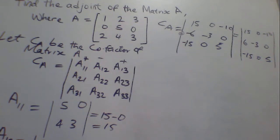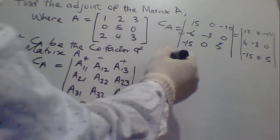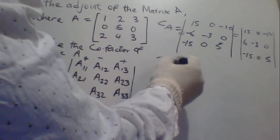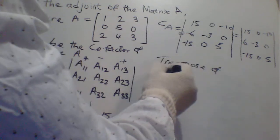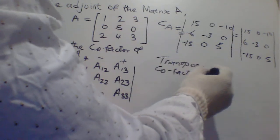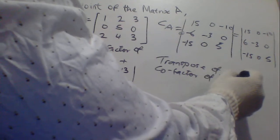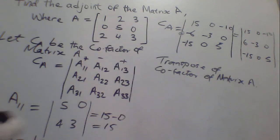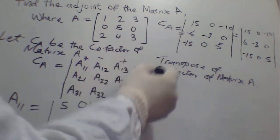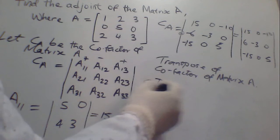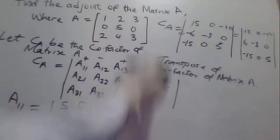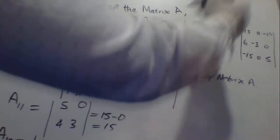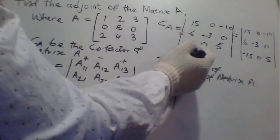So the next thing is to find the transpose of cofactor of matrix A. So we can assign it as C cofactor. The transpose of cofactor of matrix A is what? The transpose. That is, the vertical becomes the horizontal.